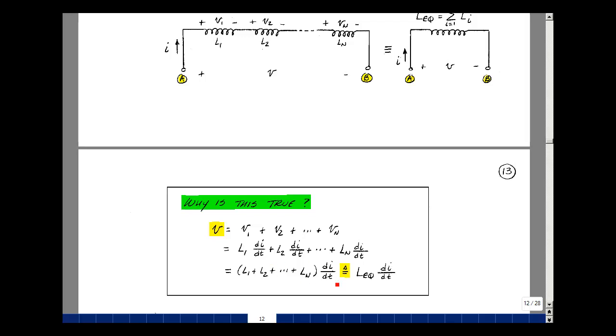You can call this sum L equivalent, and therefore you could replace these N inductances with a single inductance whose value is the sum of the inductances, just like series resistors.